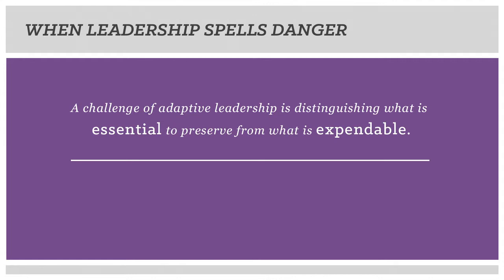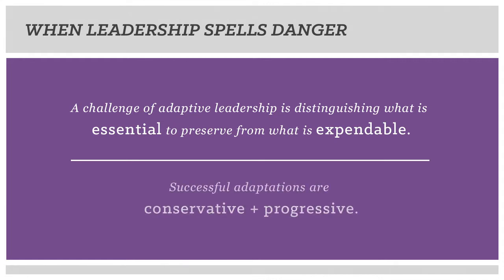In the book When Leadership Spells Danger, the authors pose that a challenge for adaptive leadership is to engage people in distinguishing what is essential to preserve from their organization's heritage from what is expendable. Successful adaptations are thus both conservative and progressive. They make the best possible use of previous wisdom and know-how. The most effective leadership anchors change in the values, competencies, and strategic orientations that should endure in the organization.